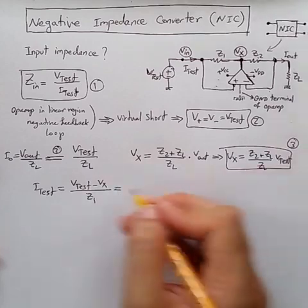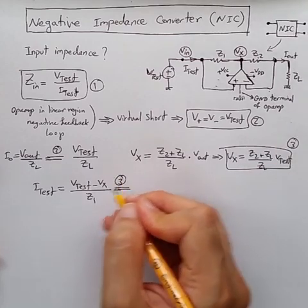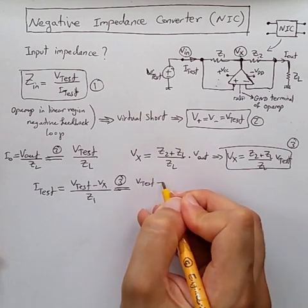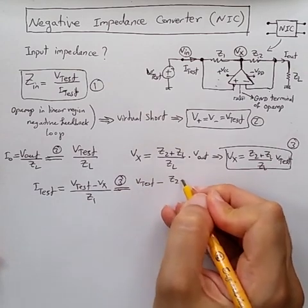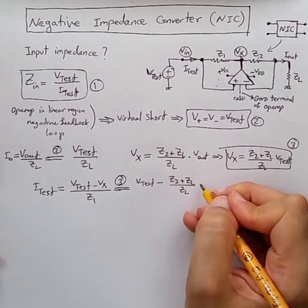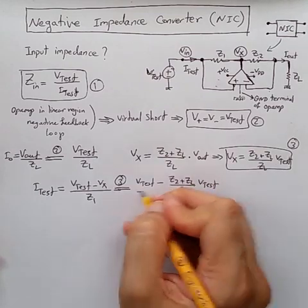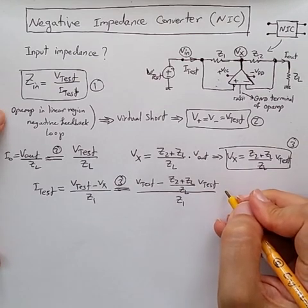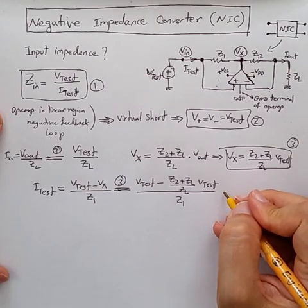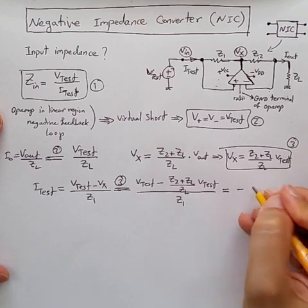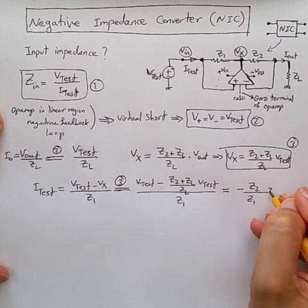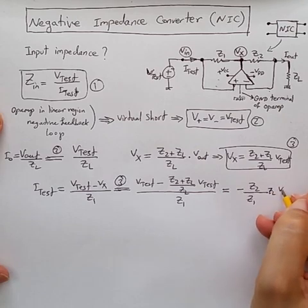And we can replace from equation 3 V-x with this. So we have V-test, minus Z-2 plus Z-L divided by Z-L times V-test, the whole thing divided by Z-1. So we can say it's equal to minus Z-2 divided by Z-1 times Z-L times V-test.